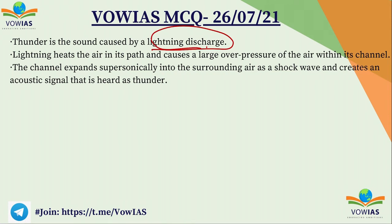During lightning, the air in its path gets heated. When this air gets heated, the pressure in that region increases. When the pressure increases, the air expands and takes the form of a supersonic wave. This supersonic wave passes into the surroundings as a shock wave, creating an acoustic signal that is heard as thunder.